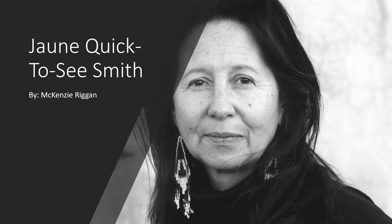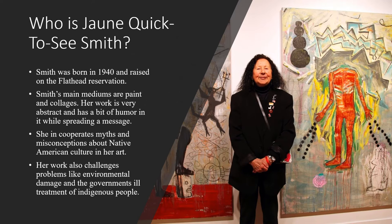The artist I chose was John Quick-to-See Smith. Who is John Quick-to-See Smith? She was born in 1940 and raised on the Flathead Reservation. Smith's main mediums are paint and collages. Her work is very abstract and has a lot of humor in it, while also spreading a positive message.